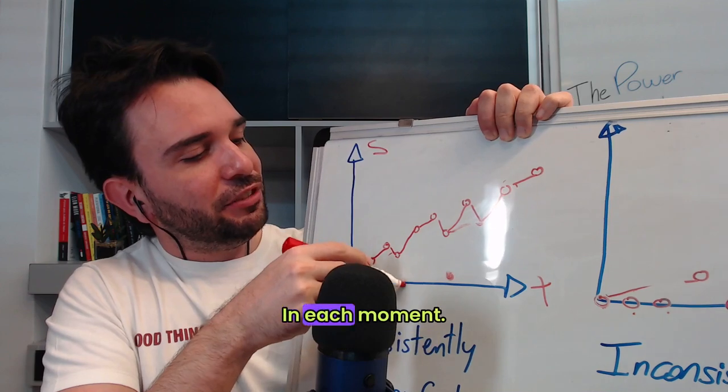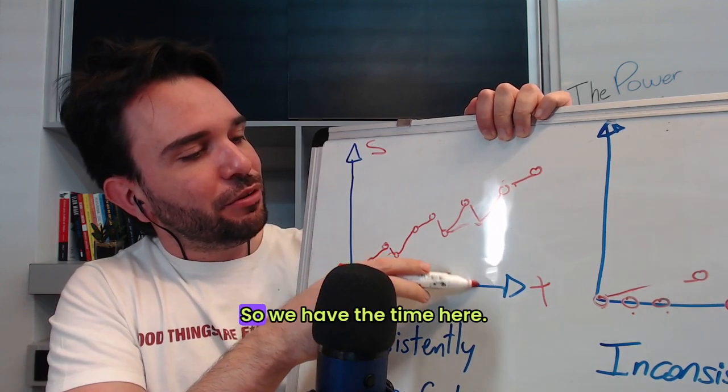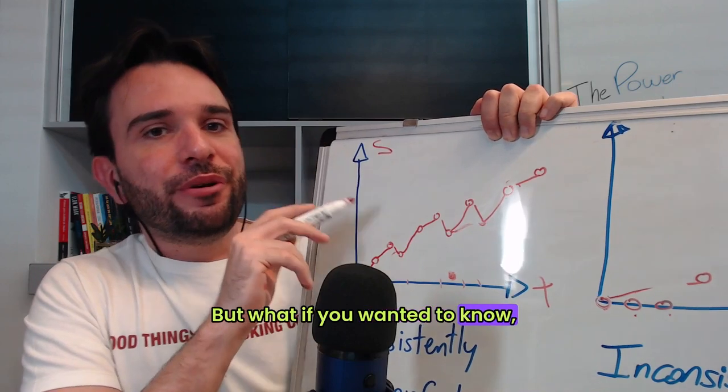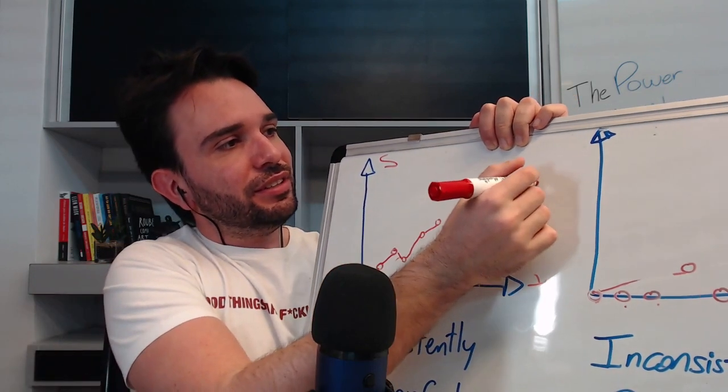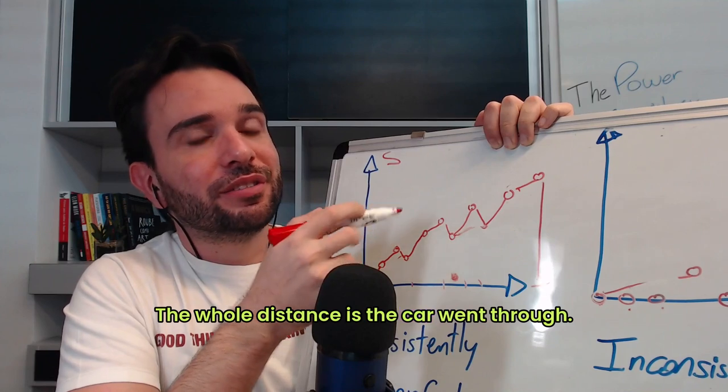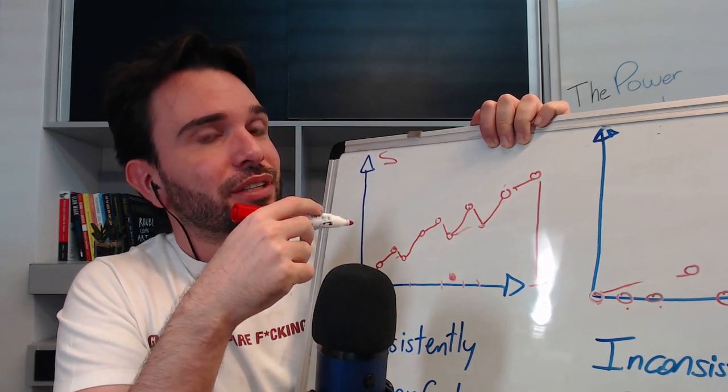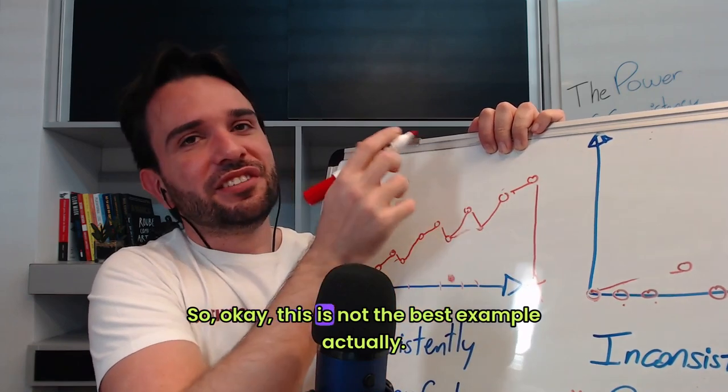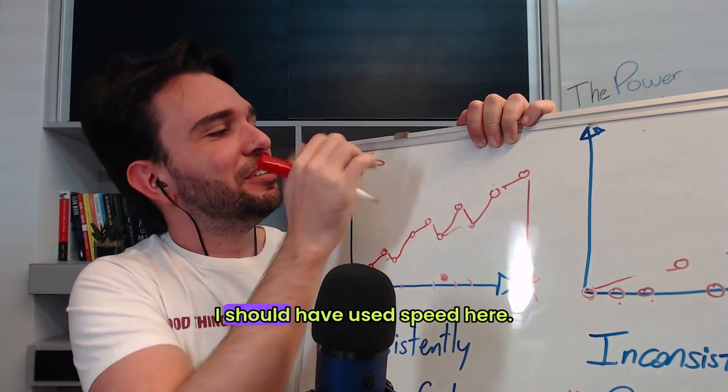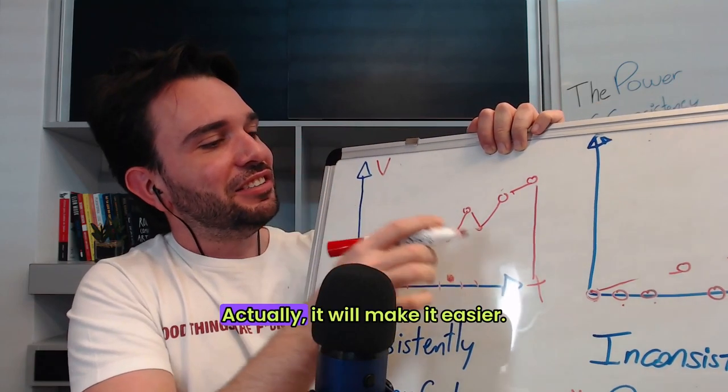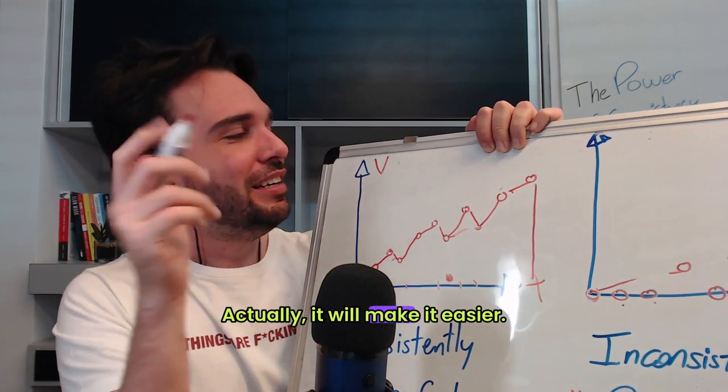So in each point the car is in a specific position, right, in each moment. So we have the time here. But what if you wanted to know the distance that the car, the whole distance the car went through? So okay, this is not the best example. Actually, I should have used speed here. Actually, it will make it easier.